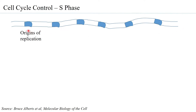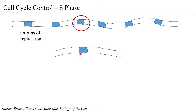There has to be a machinery that enables unwinding of the DNA at these regions. The replication machinery must recognize these origins, come and bind to them, and from these origins unwinding begins. Let us focus on one origin — the same process is happening at all other origins simultaneously.